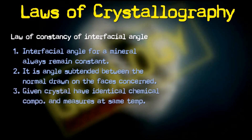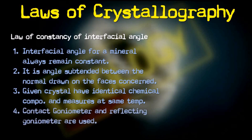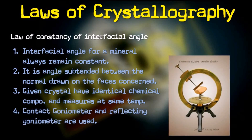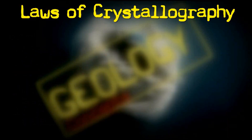The law states that, measured at the same temperature, similar angles on crystals of the same substance remain constant — that is, regardless of the size and shape of the crystal, the interfacial angle for similar crystals remains constant. These angles are measured using a contact goniometer and a reflecting goniometer. This figure shows an example of a contact goniometer.